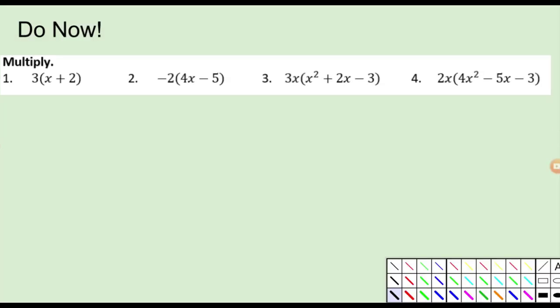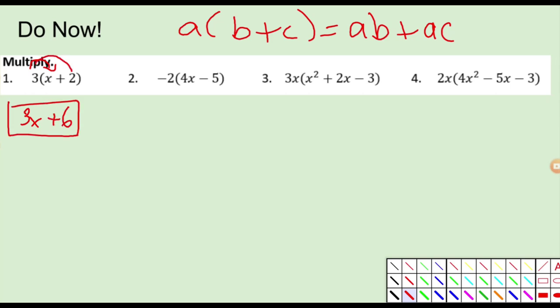All right, let's go over the do now. This would be a nice quick one. I think this goes back to third grade when we learn our distributive property. So remember distributive property was something like a times b plus c where you take a multiplied by b so you get ab and then you take a multiplied by c, ac. So we're just going to use that today. Let's do that real quick. Three times x, 3x and 3 times 2 plus 6. Game over.